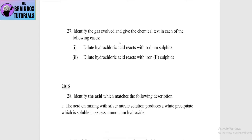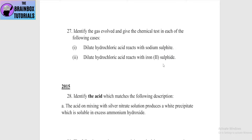Next question: identify the gas evolved and give the chemical test in each of the following cases. First — dilute HCl reacts with sodium sulfite: sulfur dioxide (SO2) gas is produced. Second — dilute HCl reacts with iron sulfide: hydrogen sulfide (H2S) gas is produced.